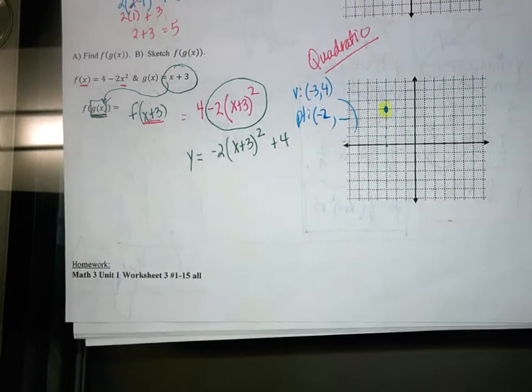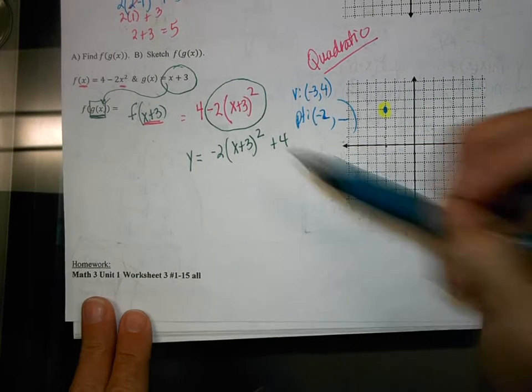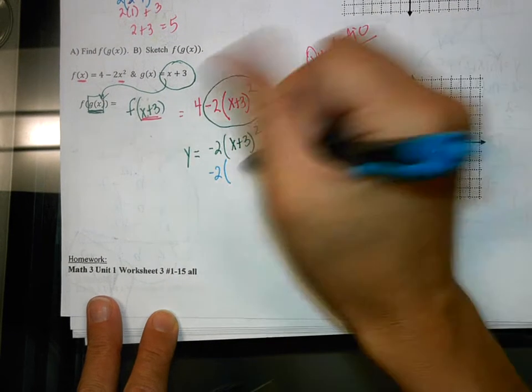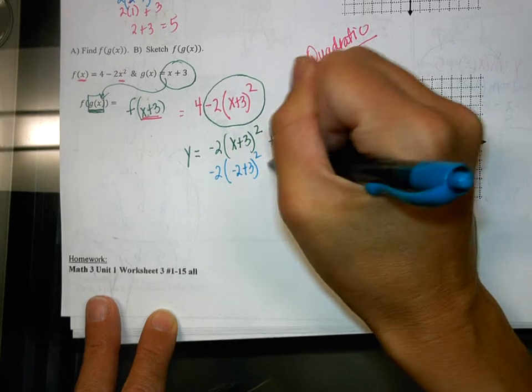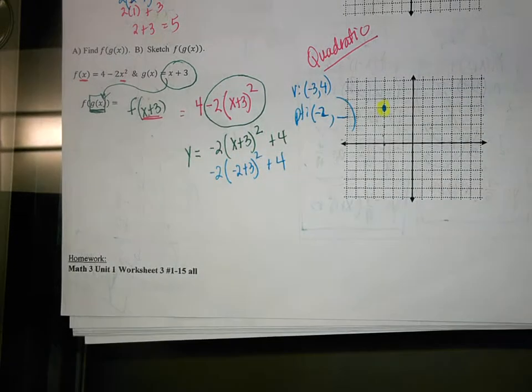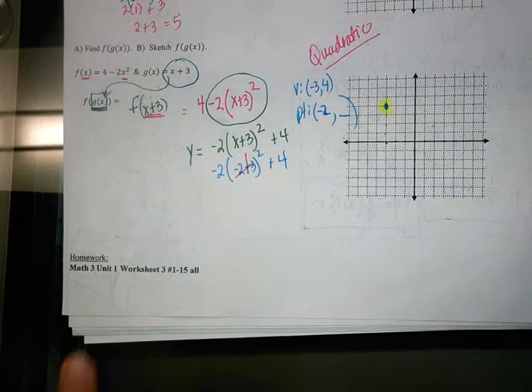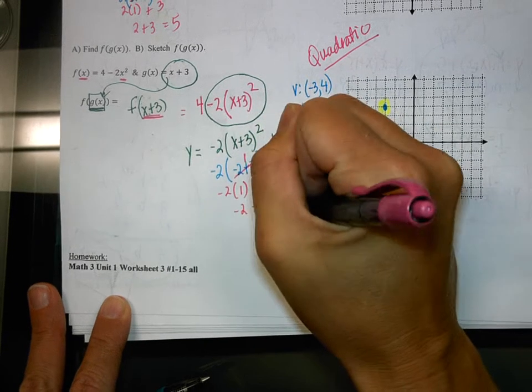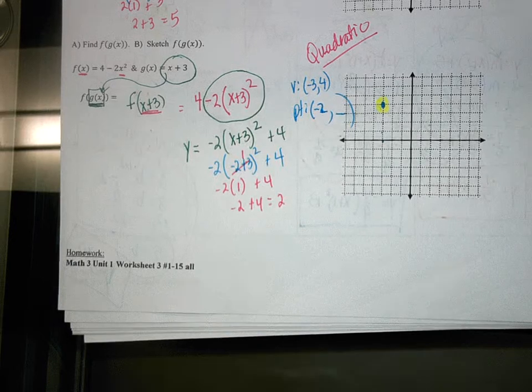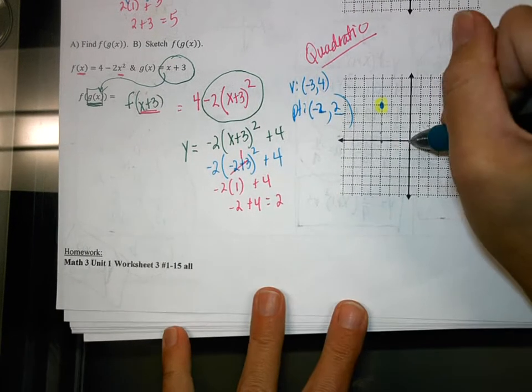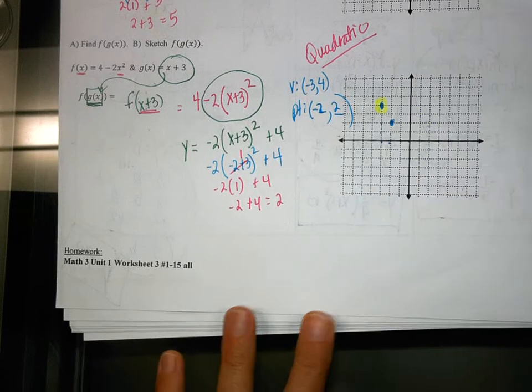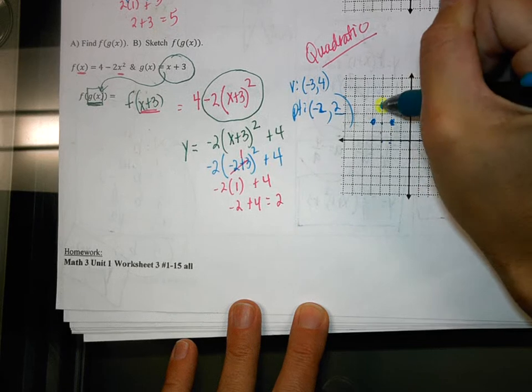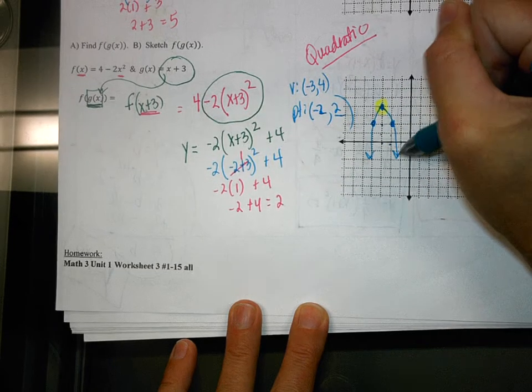So the x will be negative 2 and I need to figure out what the y is. So we do that by plugging in. We have negative 2 parenthesis. x is now going to be substituted with negative 2 plus 3 squared plus 4. What's negative 2 plus 3? 1. And 1 squared is 1. So I have negative 2 times 1 plus 4. And negative 2 plus 4 equals 2. So negative 2 up 1, 2. We make our point. And then from there we go across that vertex line. We're 1 away. So we go 1 away on the other side. We have the other point now. And we can draw our quadratic function.